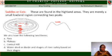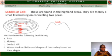We also have the following landforms: Pass, Plateau, Conical Hill, Watershed or Water Divide, and shapes of valleys based on their stages.